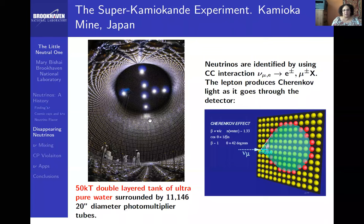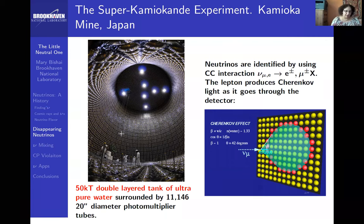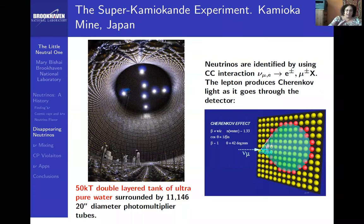Most of these neutrinos are highly relativistic. When they interact, they produce either an electron (for electron neutrinos) or a muon (for muon neutrinos). Because they are relativistic, these charged particles actually travel through water faster than the speed of light in that medium — the speed of light in water is less than in vacuum due to the index of refraction. So the photons they produce become the equivalent of a sonic shockwave — a cone of light traveling in the direction of the charged particle.